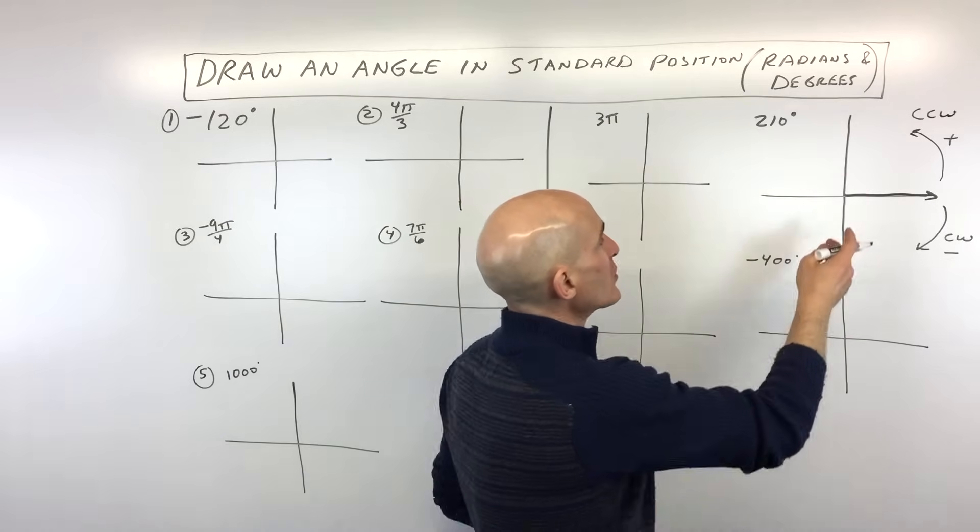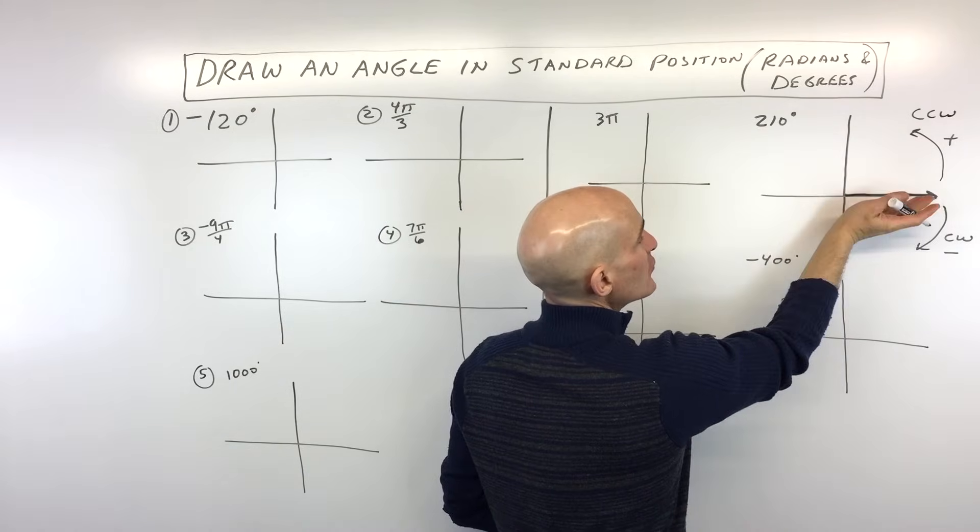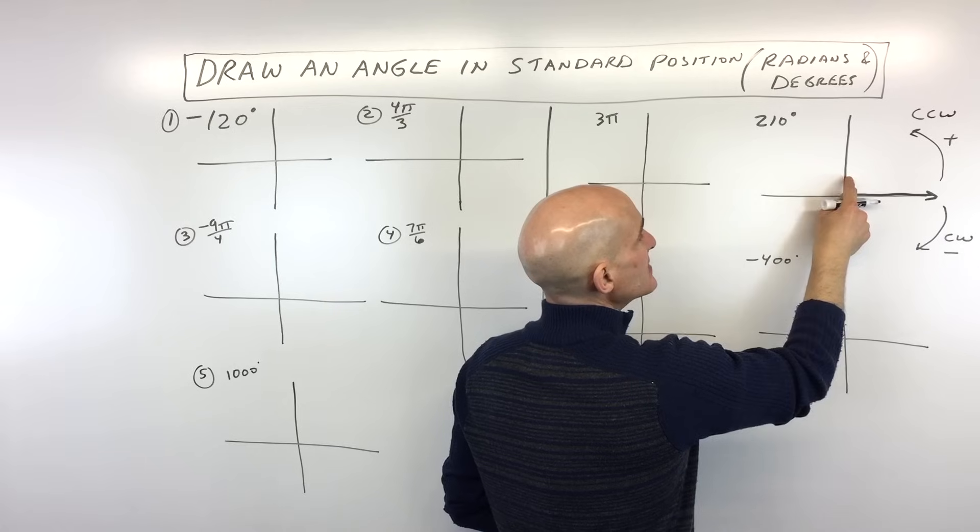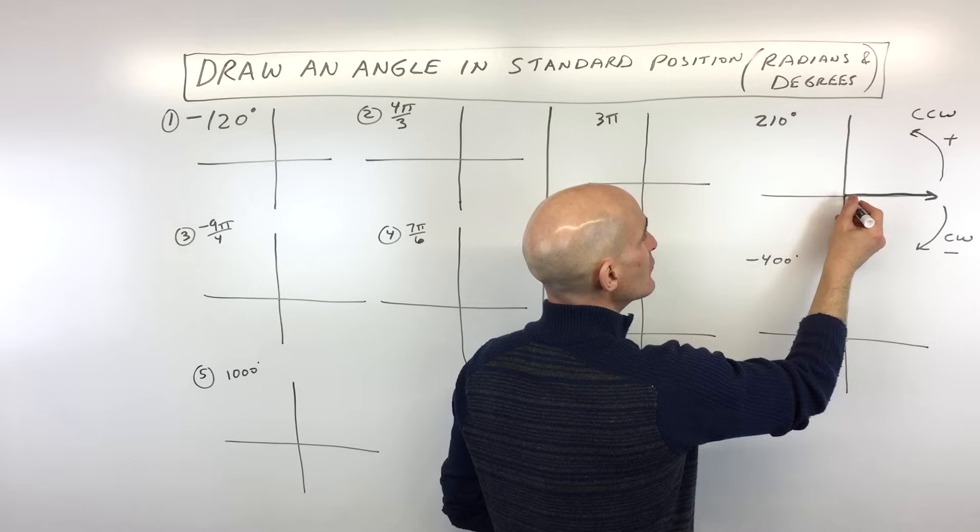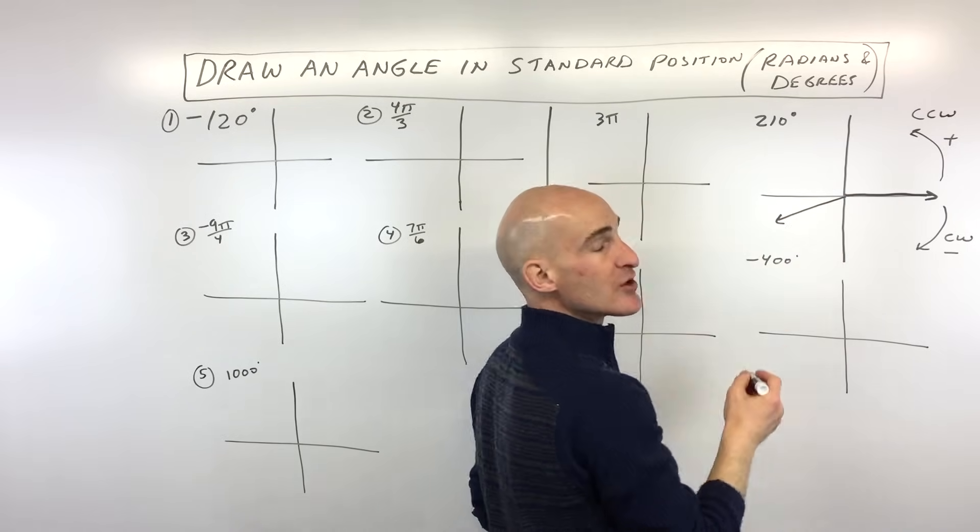So again, what we're going to do is we're going to start here. 210 degrees, we're going to rotate. 90 is here. 180 is here. That's a half a turn. Plus 30 more is going to put us over here at 210 degrees.